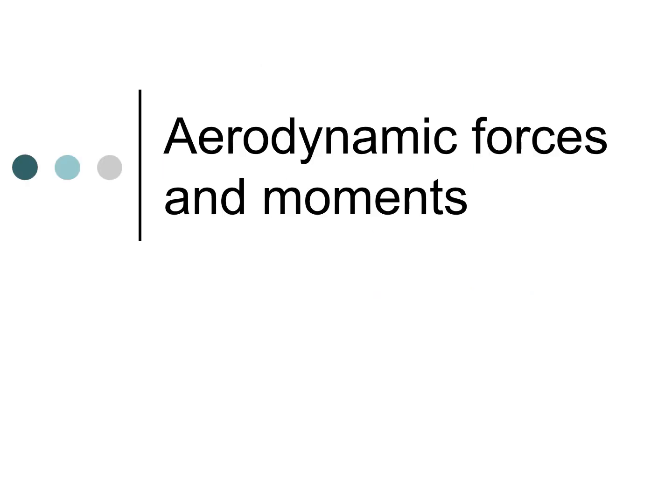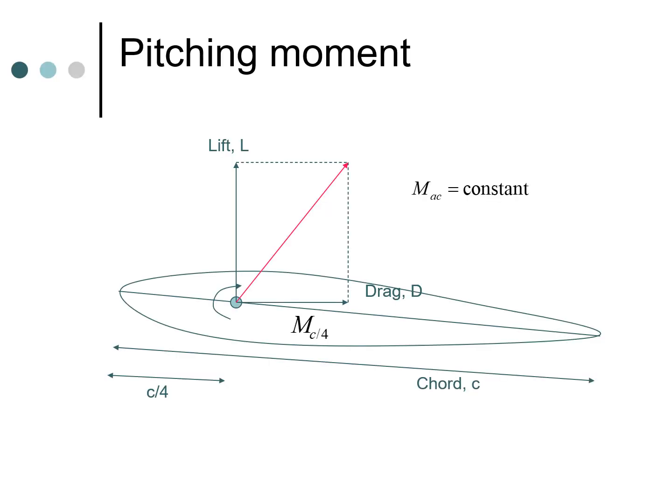Now let's look at aerodynamic forces and moments. When we put the airfoil in the wind, we are going to get three forces which are going to act on it. Let's say we take these forces at a point known as the quarter chord. Quarter chord is a point which is at a distance c by 4 from the leading edge. So c is the chord of the entire airfoil, and c by 4 from the leading edge we get this quarter chord.